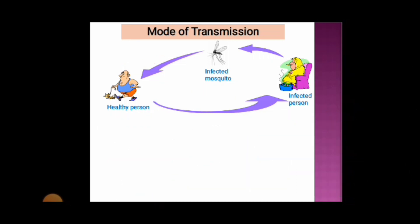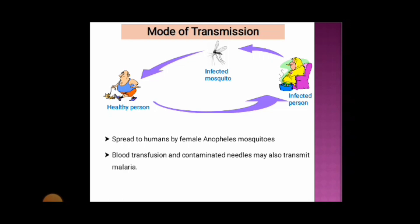The details of the life cycle of the malaria parasite are discussed in a previous video — the link is in the description box. Malaria is spread to humans by the female Anopheles mosquito. Blood transfusion and contaminated needles may also transmit malaria, but this rate is very low. This disease is mainly transmitted by mosquito bites. Note that malaria is not spread by contact with infected persons.